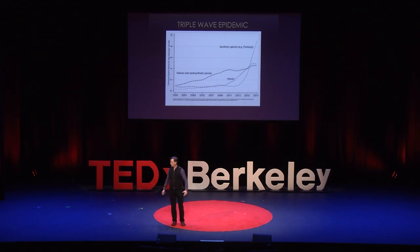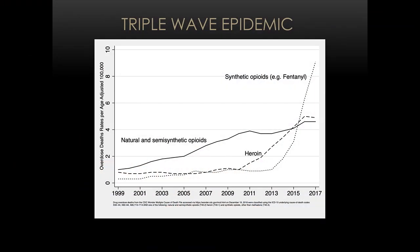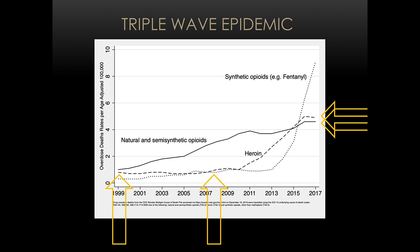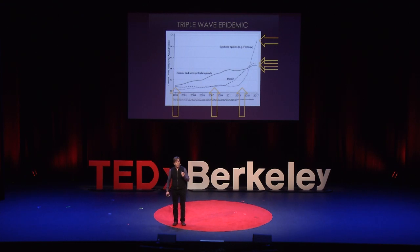What else are we learning? Let's give a contemporary example. This is the current opioid overdose crisis that is devastating parts of our country. I call it a triple wave epidemic, where deaths due to opioid pills in the first wave were exceeded by deaths in the second wave — heroin — building on the momentum of the first wave. And then the deadliest wave yet is synthetic opioids such as fentanyl and its cousins. What have we learned in three years of ethnographic research in multiple U.S. cities and towns? Let me tell you one story.